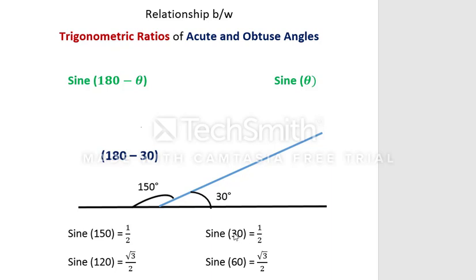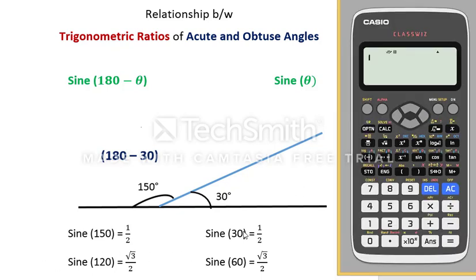Now we are going to find the sine of acute and obtuse angles and then compare their ratios. Sine 30 is 1/2. Sine 150 — we got 150 by subtracting 30 from 180 — is also 1/2. Therefore, we can see that the sine of an acute angle and an obtuse angle have the same numerical ratio.